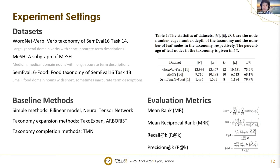For our experiment setting, we use three datasets with different characteristics. First, WordNet-Verb is a verb taxonomy from SemEval 2016 Task 14 — a large general-domain verb taxonomy with short and accurate term descriptions. MeSH is a subgraph of MeSH — medium-sized medical domain nouns with long, accurate term descriptions. SemEval 2016 Food is a small-sized food domain noun taxonomy with short and sometimes inaccurate term descriptions. Baseline methods include simple methods like bilinear model and neural tensor network, state-of-the-art taxonomy expansion methods TaxoExpand and Arborist, and the state-of-the-art taxonomy completion method TMN. Evaluation metrics include mean rank, mean reciprocal rank, recall at K, and precision at K.